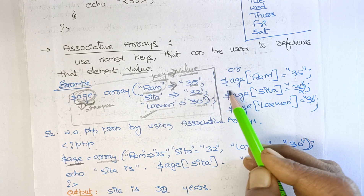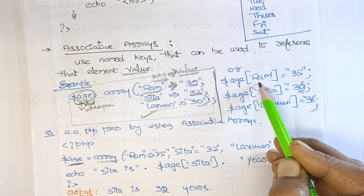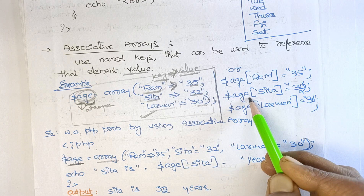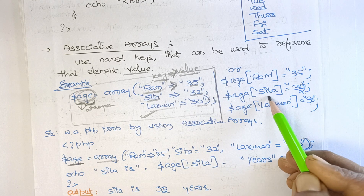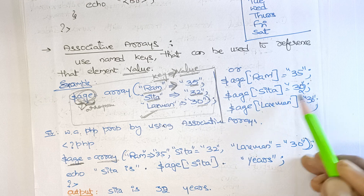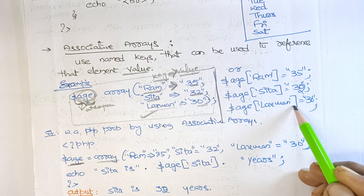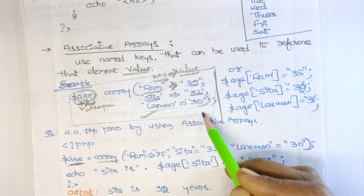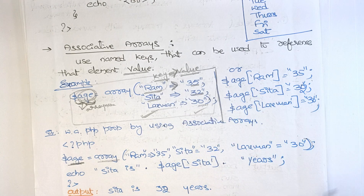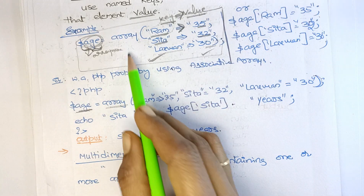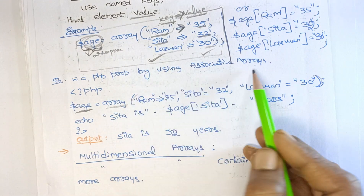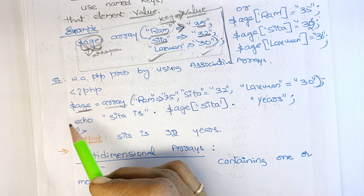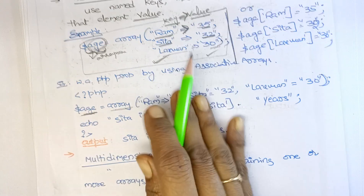Alternatively, you can write it simply as: dollar array name of key is equal to value. You can use either method — both are valid. You can write any one method you prefer.